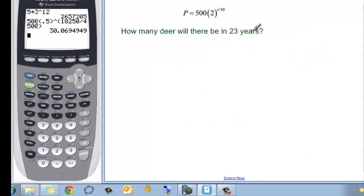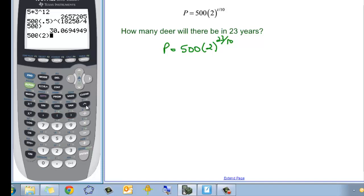How many deer will there be in 23 years? We started in years, we're still in years. So we don't have to worry about changing units here. We just have to plug and check. So we want to know what's the population in 23 years. So 500 times 2 to the 23 over 10. And again, to our calculator we go, 500 times 2 caret parentheses 23 divided by 10.